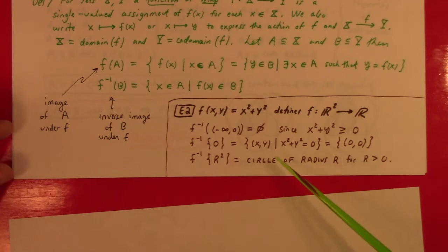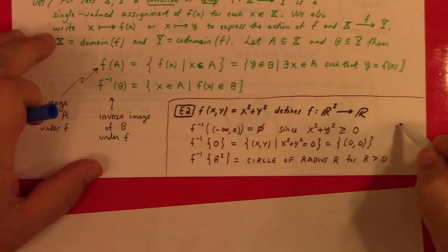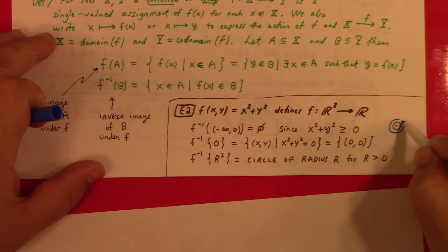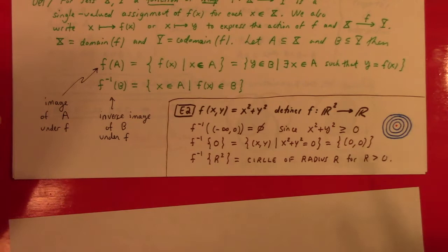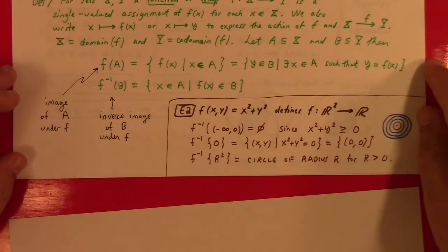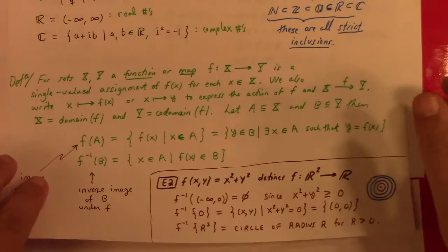If you draw it, it's kind of neat. The inverse image of 0 is just the origin, and then you have circles — the inverse image of each value R² gives you a different circle. If you keep looking at these circles, they fill out the plane: each point in the plane falls on just one circle of a particular distance from the origin, plus the origin itself. The set of circles and the origin partition the plane into disjoint subsets — and that's not an accident.